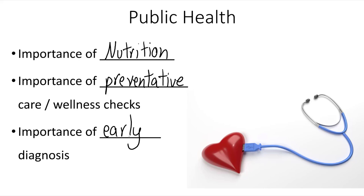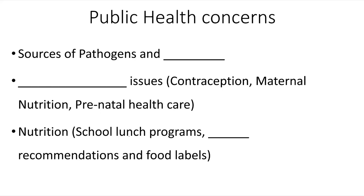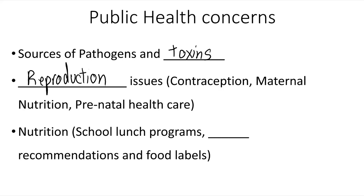When we talk about public health concerns that epidemiologists and public health experts care about: knowing sources of pathogens and toxins is one concern. Another concern is reproduction issues — from contraception to maternal nutrition and prenatal health care programs. Nutrition, food lunch programs, and the FDA recommendations seen on food labels are all elements of public health to try to increase knowledge and improve outcomes for our society.